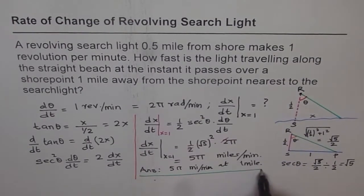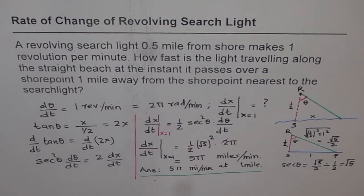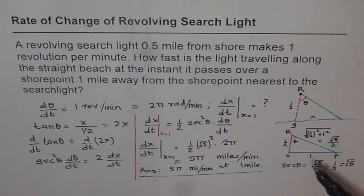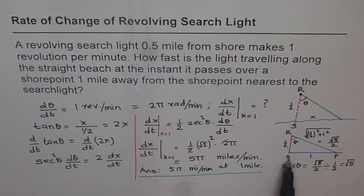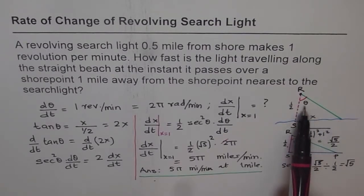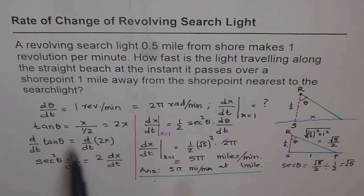To summarize: the first part of solving any word problem is to read carefully and draw a diagram. We drew a general diagram and a specific triangle for x = 1 mile. The second part was finding a relation between the variables x and theta using tan θ = 2x, then differentiating and substituting. That is how such problems are solved. Thank you and all the best.